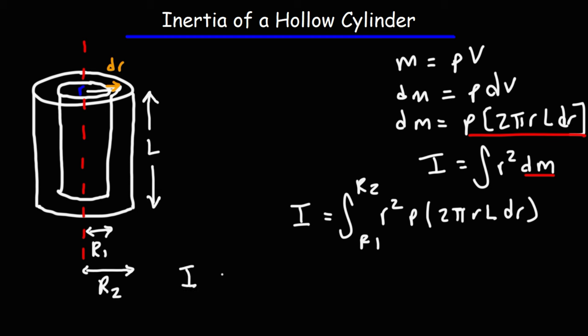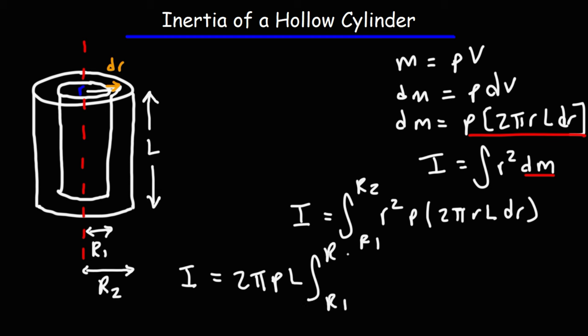I'm going to move all the constants to the front. So 2π is a constant. Rho, or ρ, is the density — we're assuming uniform density throughout the cylinder, so it's constant. The length of the cylinder is constant as well. Then we have the integral from r1 to r2 of r squared times r, which is r to the third power, dr.